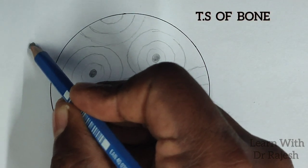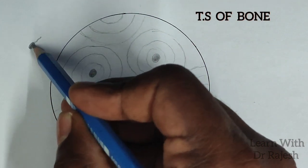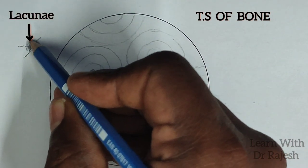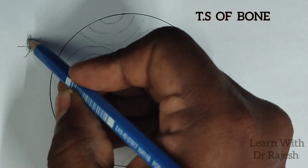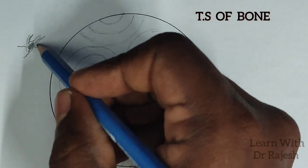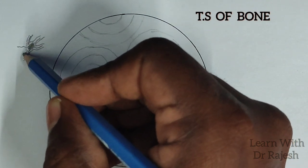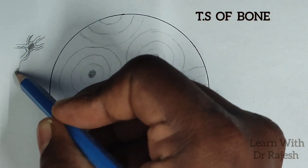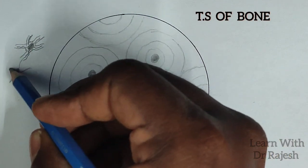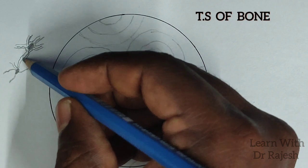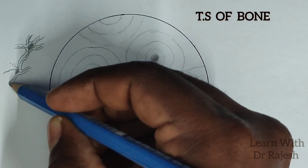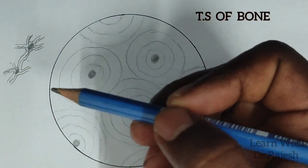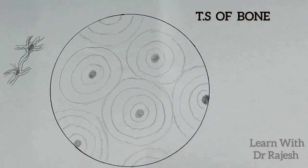Next, how to draw osteocytes. These are oval cells with multiple processes, as shown here. Each cell is placed inside lacunae. These lacunae extend into the processes as well. The extension of the lacunae into the osteocyte processes connects to the processes of the neighboring osteocyte. The lacunae are interconnected by bridging channels called canaliculi.